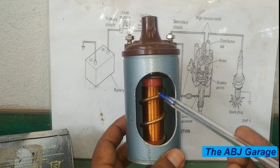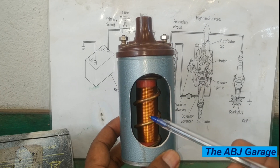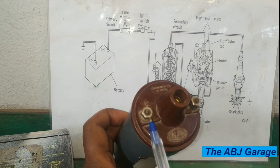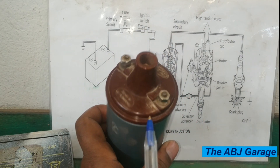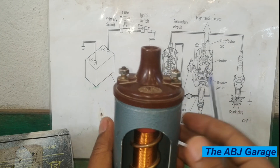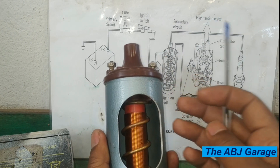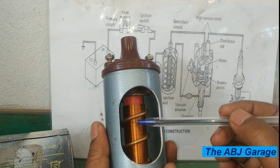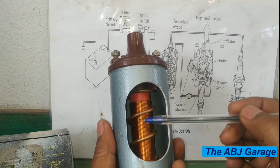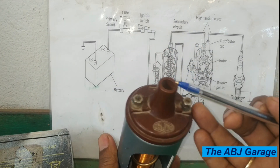There are two sets of winding: one made up of thick wire, and the other made up of fine wire. The thick wire with a low number of turns is called the primary winding. It begins from ignition coil positive and exits through ignition coil negative. The secondary winding is made up of very fine wire with lots and lots of turns, wound on an iron core, beginning at the positive terminal and exiting at the center terminal.